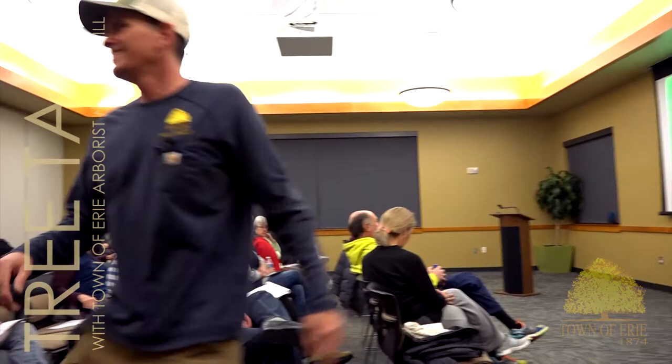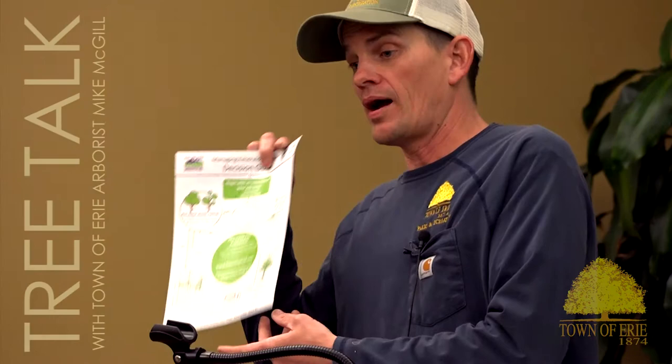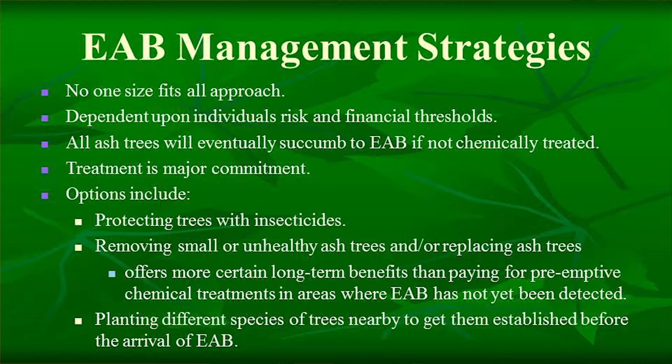There are some great publications in the back, including a decision guide with a flowchart on whether you should treat your ash trees. Your options include protecting trees with insecticides — there are several different ones with varying toxicity levels. Some give one year of protection, some two years, and some claim up to three years. Some are applied into the soil and some go directly into the trunk. I highly recommend picking up those publications.